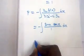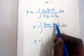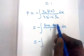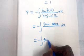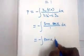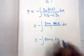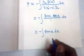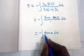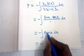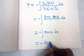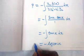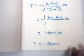So we have −∫ sin(x)·sec(x) dx = −∫ sin(x)/cos(x) dx = −∫ tan(x) dx. The integral of tan(x) is log|sec(x)|. Therefore P = −log|sec(x)|.